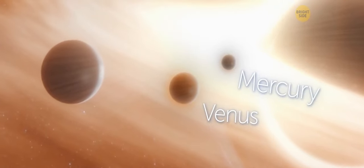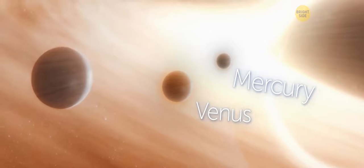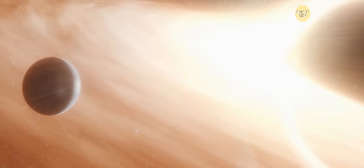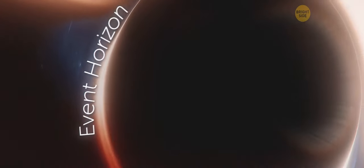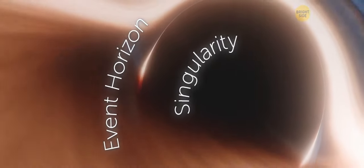Mercury and Venus would be too close to the black hole. So, most likely, they'd be torn apart and then head for the event horizon. This is the last stop before hitting the singularity, the heart of the black hole.